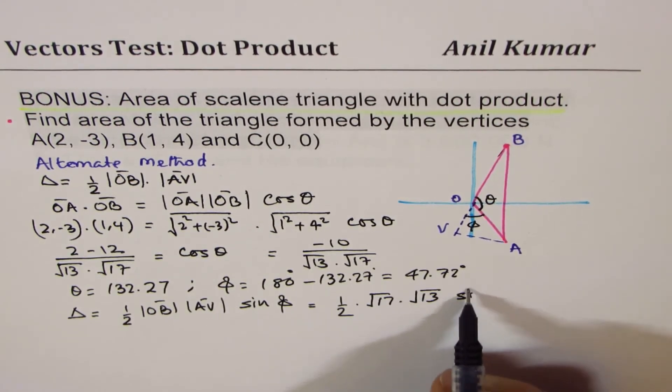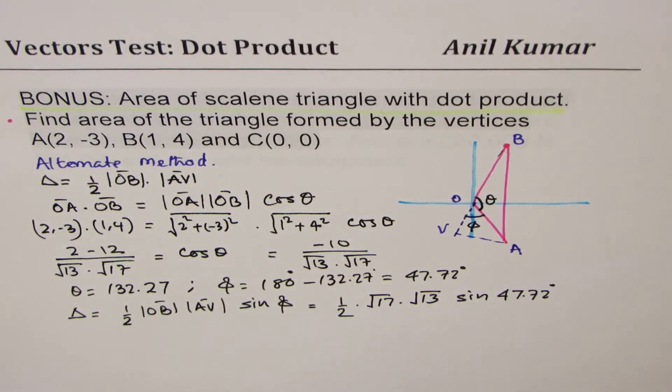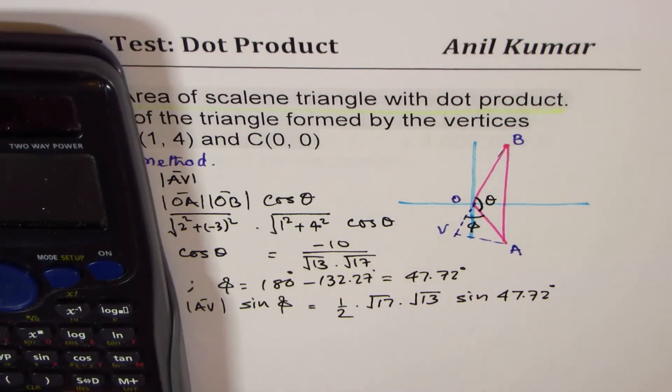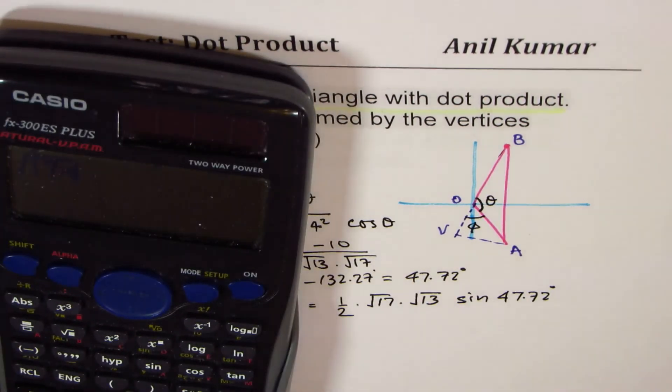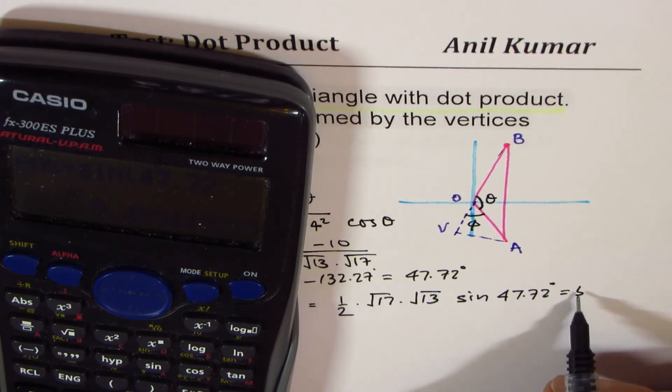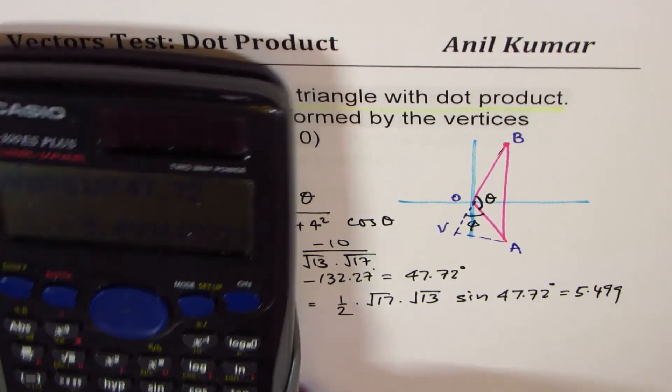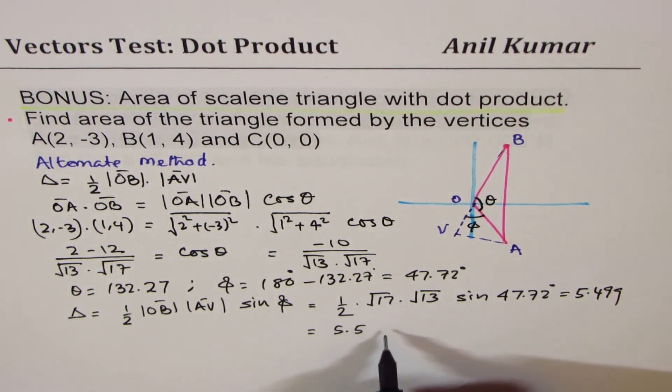And sine of 47.72 degrees—that gives you the area. So let's do this calculation: √(17 × 13) divided by 2, then multiply by sin(47.72°). That equals 5.499, which is equal to 5.5 unit square.